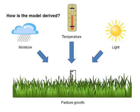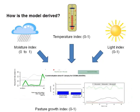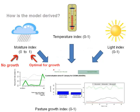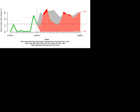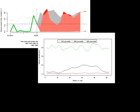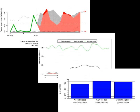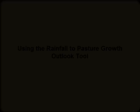All input variables are expressed as values between 0 and 1 — 0 being none at all and 1 being optimal input for pasture growth. The tool produces several useful outputs, and we will show you how to interpret these in modules 2, 3 and 4.